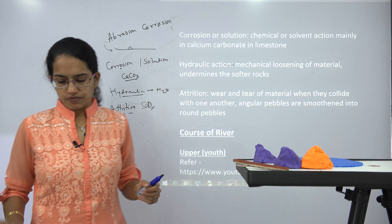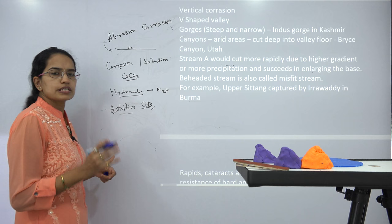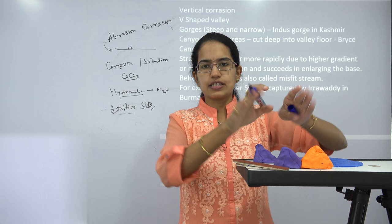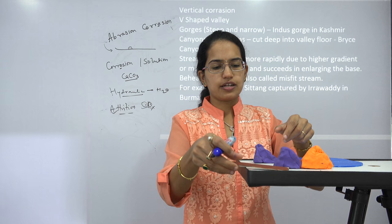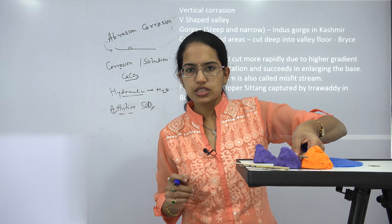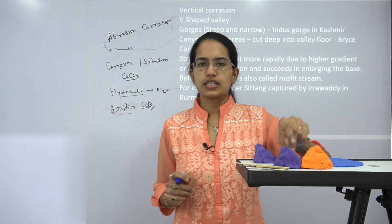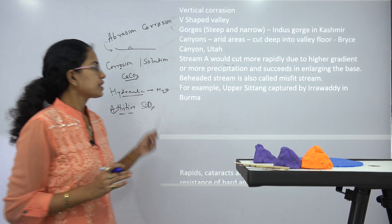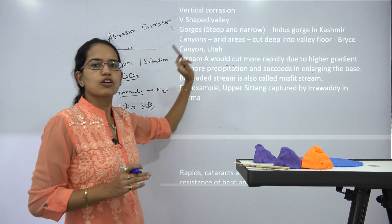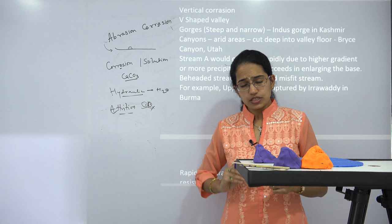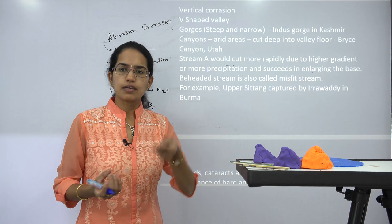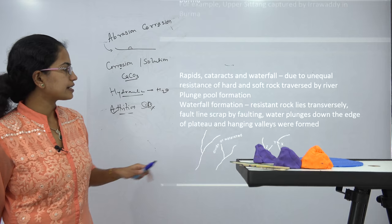Moving on to the course of the river and features formed: the most common feature is a V-shaped valley, where a river flowing between two mountains cuts and deepens between them. When this V-shaped valley deepens further we call it gorge formation. In certain cases canyons are formed, commonly seen in arid or dry areas, and the term canyon is also used to describe a formation deeper than a typical V-shaped valley.